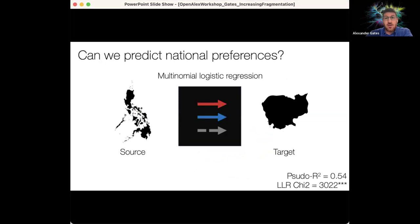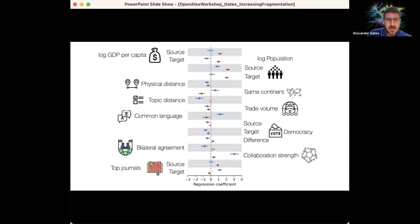So quick question, can we predict these national preferences? We built a big multinomial logistic model to try to predict both the presence and the sign of a link between a source and target country. We do fairly well at this task. It's a pretty hard task in general, but it allows us to actually explore how a bunch of different control variables might influence the presence of links in this network. So here's a quick forest plot of everything that's going on, but I'll call your attention to a few of the variables that we looked at.